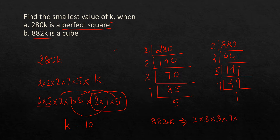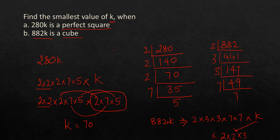For 882k to be a perfect cube, all prime factors must appear in groups of three. We have one 2 (need two more), two 3s (need one more), and two 7s (need one more). So k = 2 × 2 × 3 × 7 = 84. The answer is k = 84.